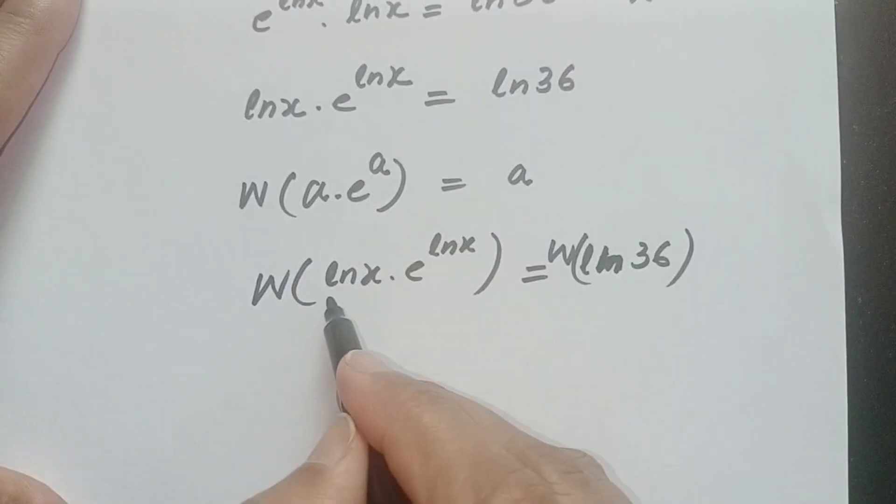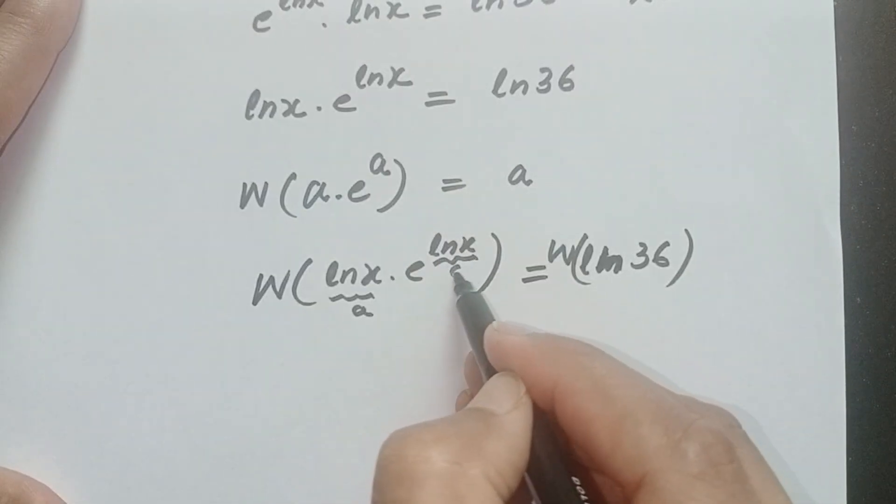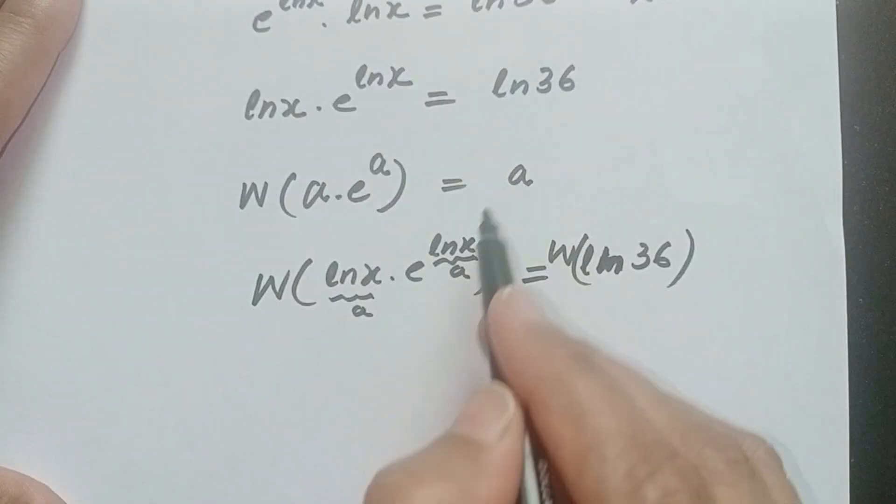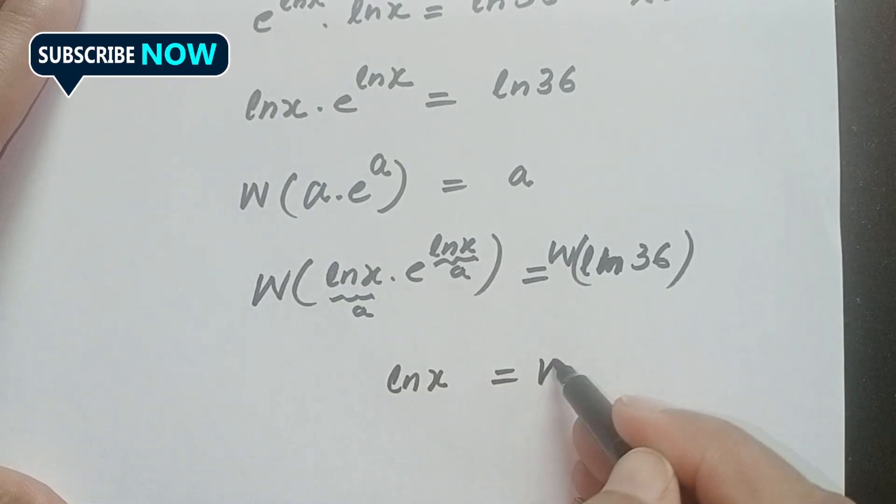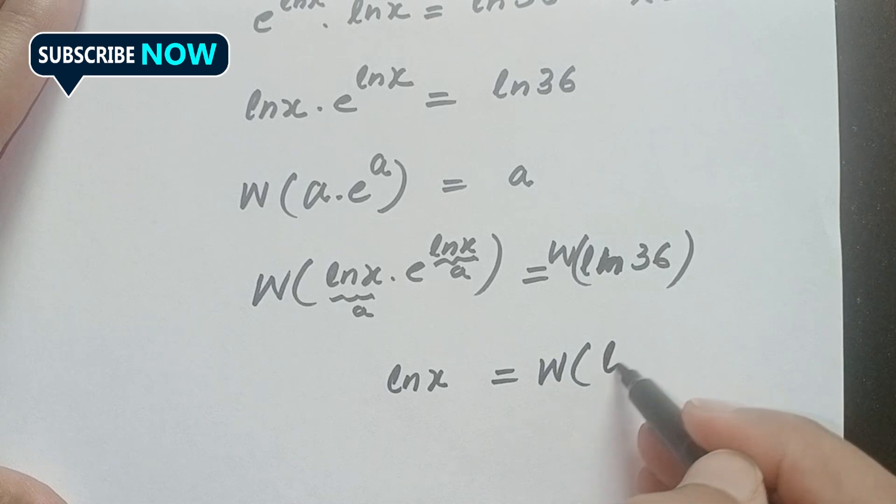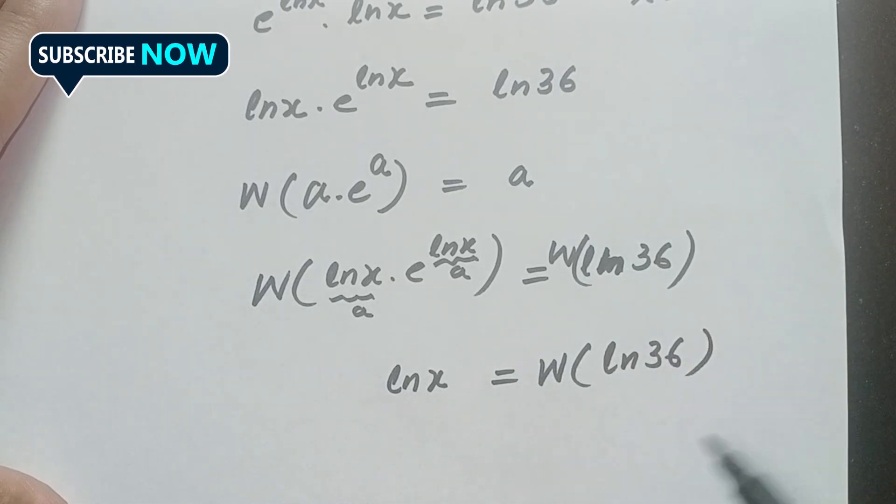So here it is our a. Here we get the value ln x. So we have ln x is equal to Lambert W function. Here ln 36 will remain the same.